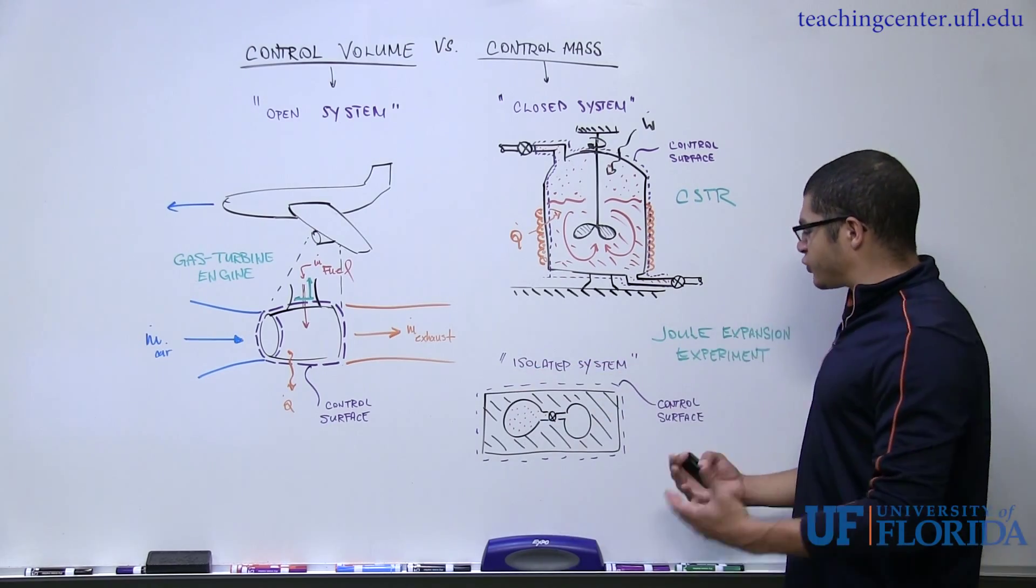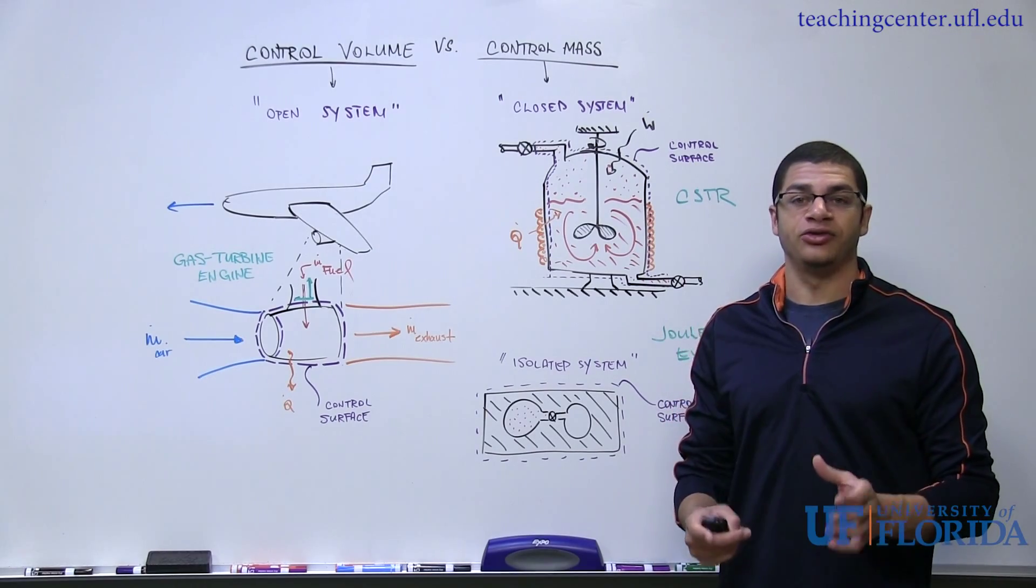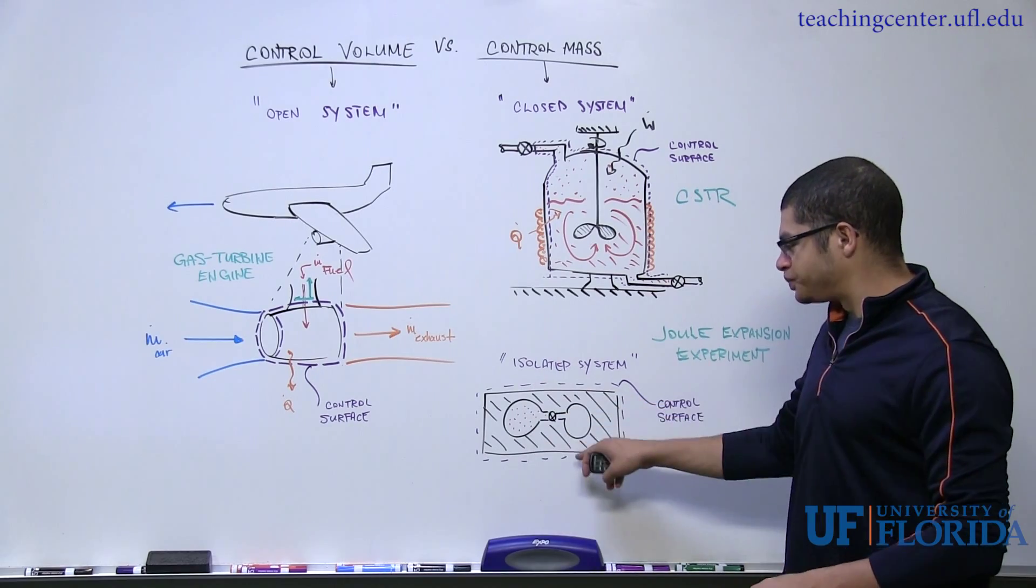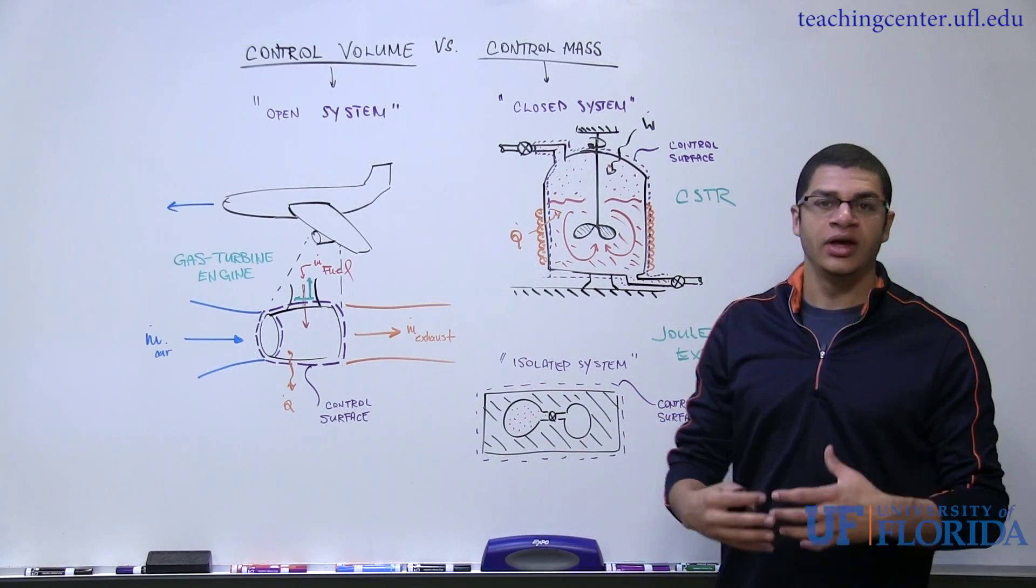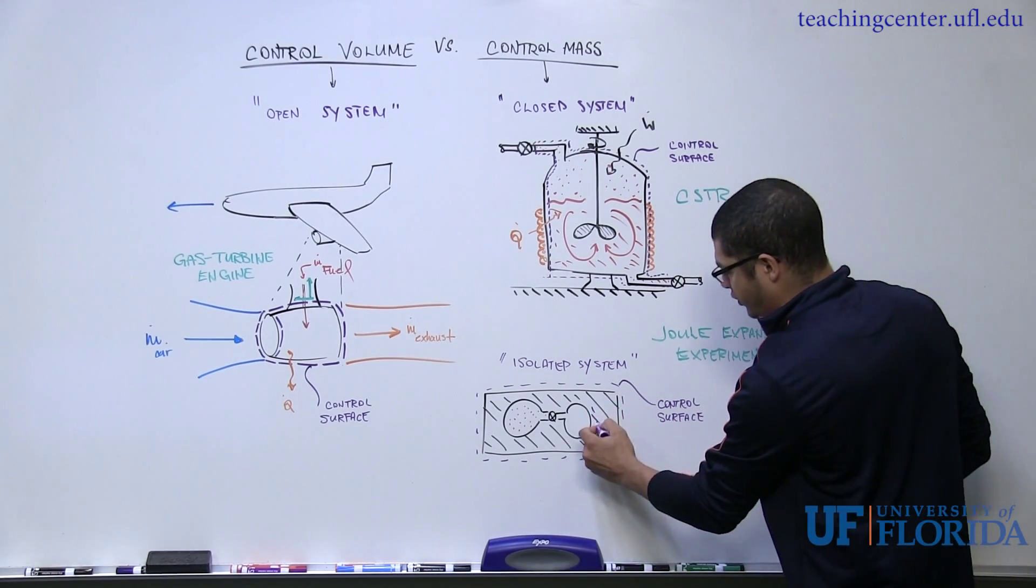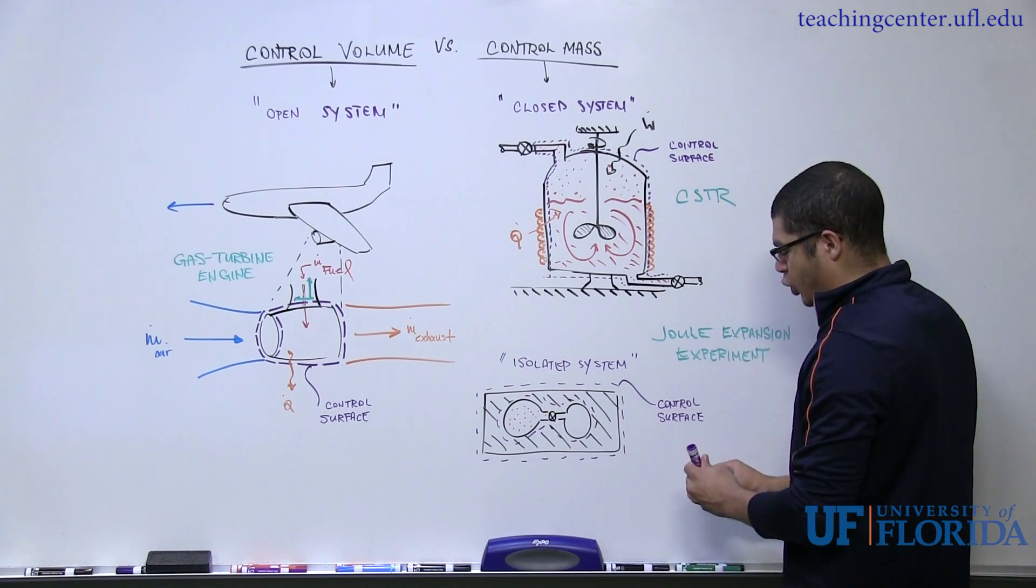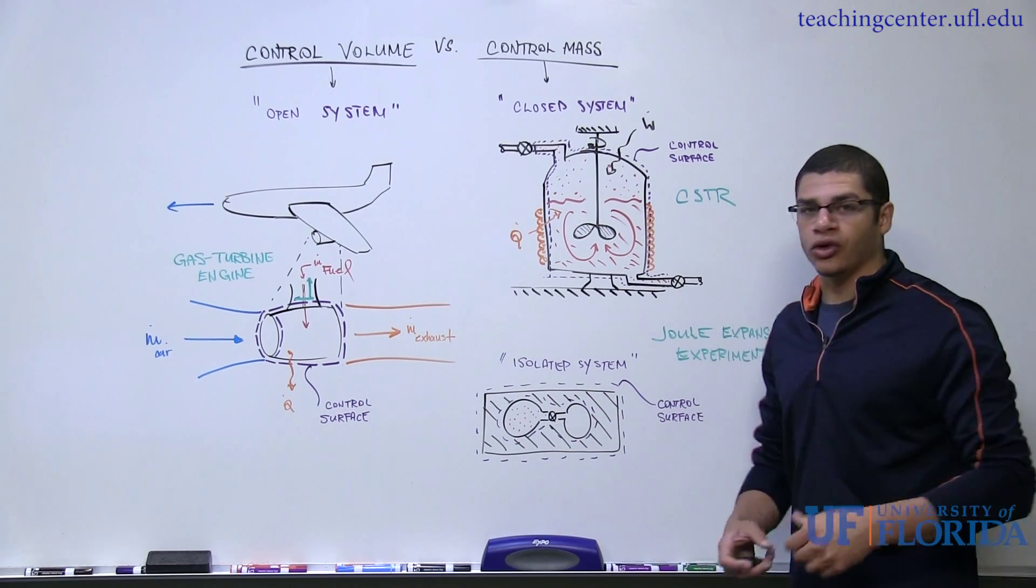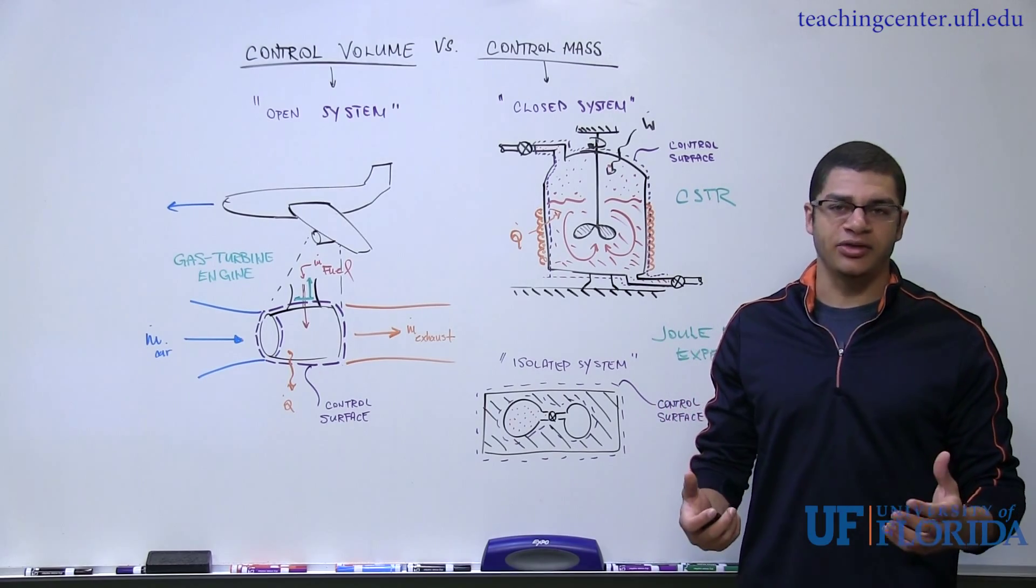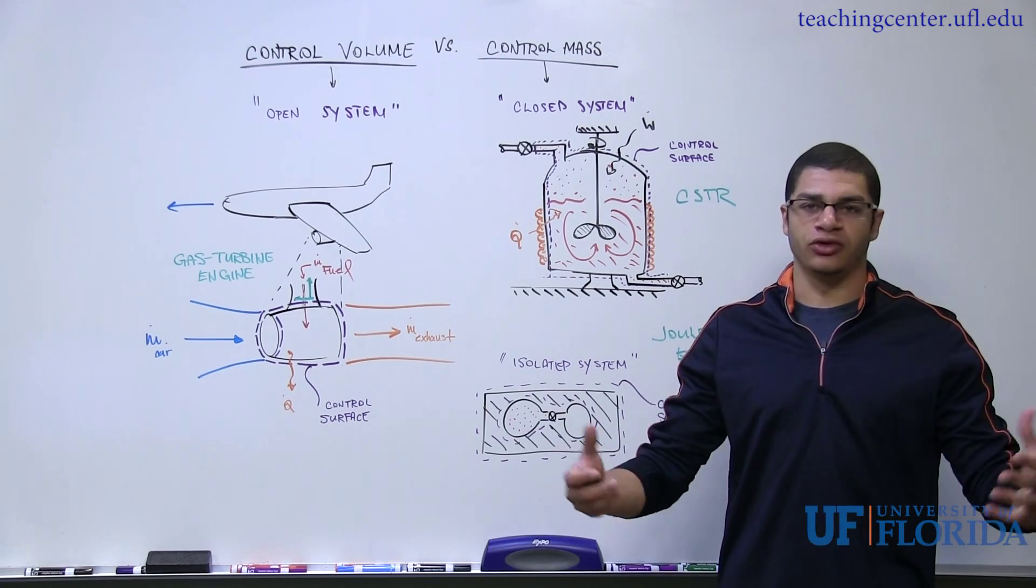Isolated is used to describe this type of thermodynamic system because there are no interactions between the system, in this case both the structure and the tanks themselves, and the surroundings. Or, if we wanted to be even more specific, just the tanks themselves. Now in purple, what I've drawn is called a control surface.